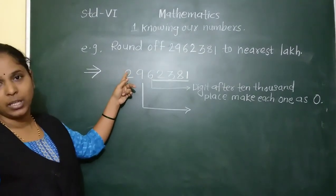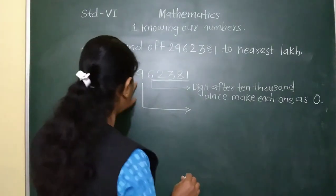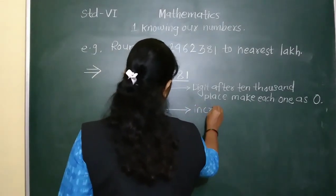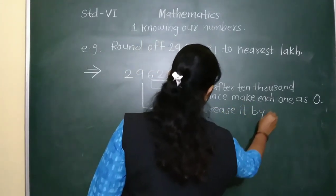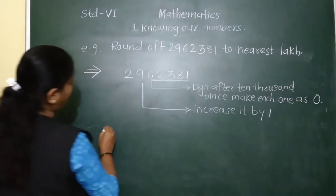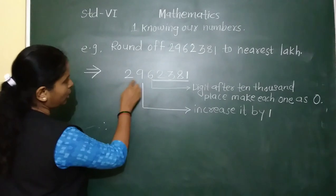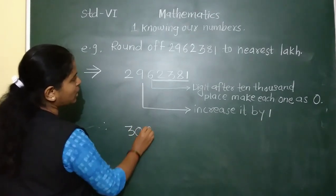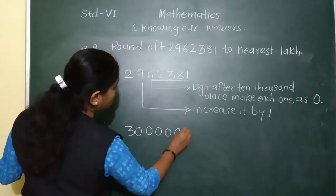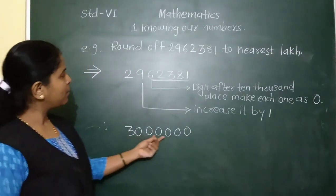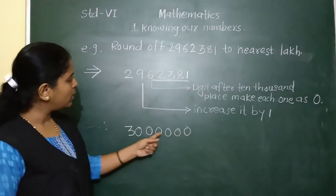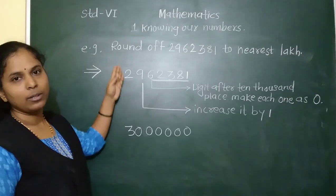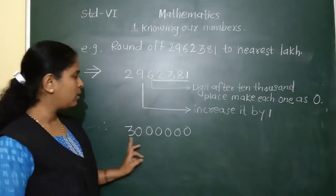Other places remain as 0, and 9 increases by 1 to become 10 — so 0 at that place and 1 carries to the crore's place: 2 plus 1 equals 3. So the round off of 29,62,381 to the nearest lakh is 30,00,000.